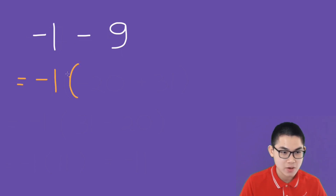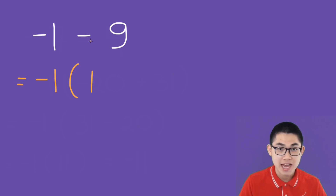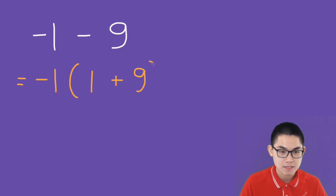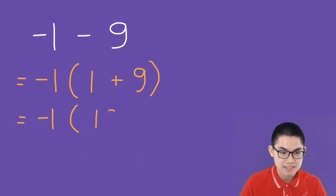Let's try negative 1 minus 9 using the second method. We factor out negative 1 and flip the signs. So negative 1 becomes positive 1 and negative 9 becomes positive 9. This gives us 1 plus 9, which is 10, and negative 1 times 10 gives you negative 10.